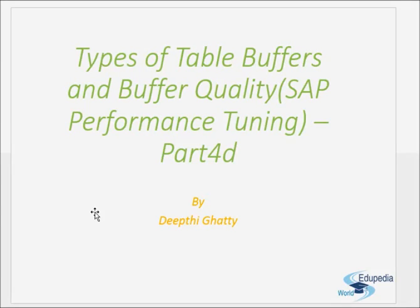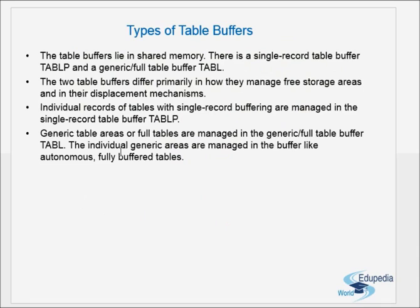Hello everyone, thank you for watching Edupedia World videos. In this video we learn about the types of table buffers. The table buffers lie in the shared memory. There is a single record table buffer TAB LP and a generic or full table buffer TAB L. So we have two types of table buffers: a single record table buffer and the generic or full table buffer. These are identified as TAB LP and TAB L.